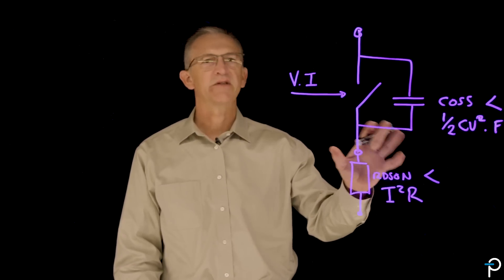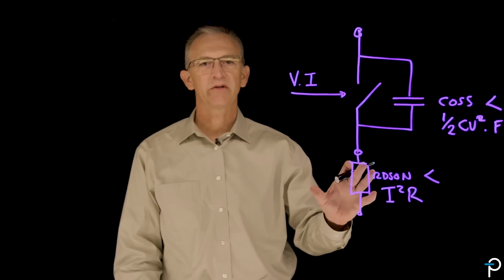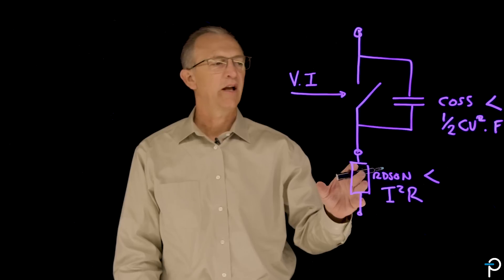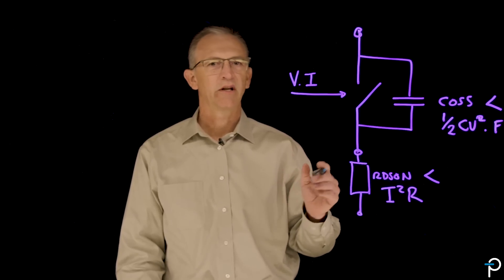We get closer to the ideal transistor if we can minimize COSS and minimize RDS-on. Now, gallium nitride does this for us in a way that allows us to make more efficient, cooler running, and more compact power supplies. Let me show you how.